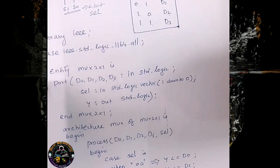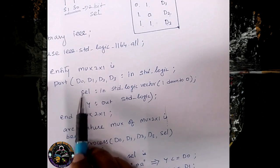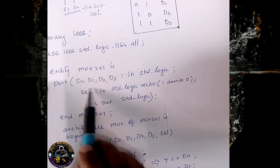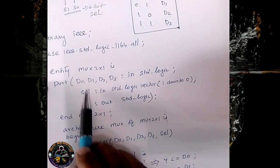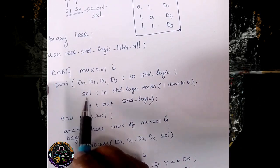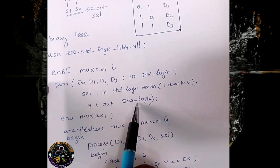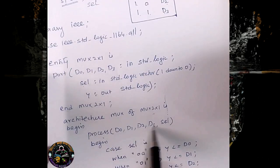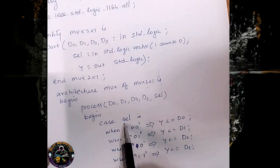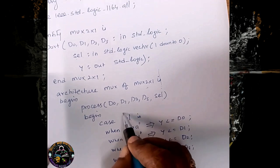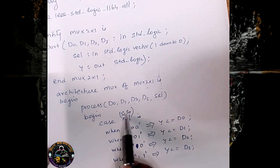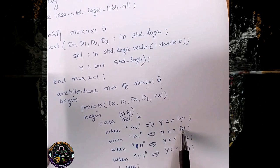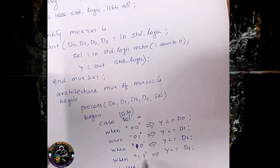So to summarize: library declaration, entity declaration, and then we declare our ports — the inputs, and we take 'sel' as a single variable for the 2 selection lines, considering it as a 2-bit std_logic_vector. Y is the output. We end our entity, then architecture declaration and process. Within the process we list all changing inputs and check the selection line S1 and S0: 00→D0, 01→D1, 10→D2, 11→D3. Then end case, end process, and end architecture.